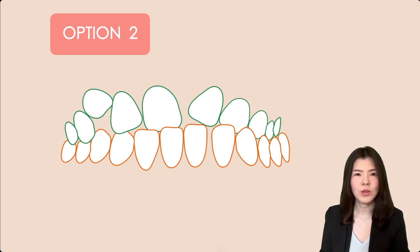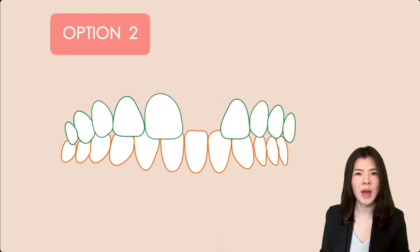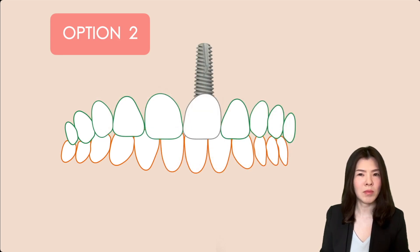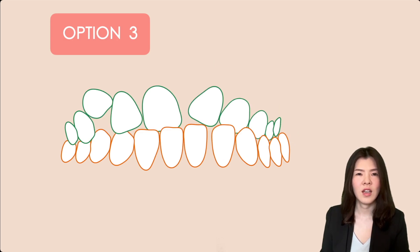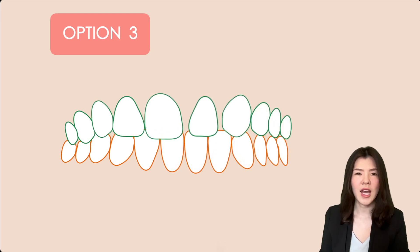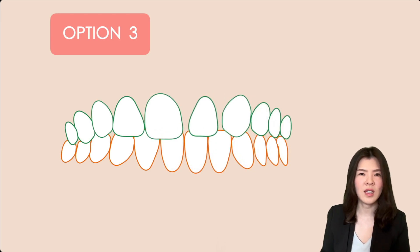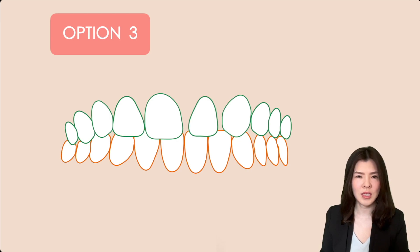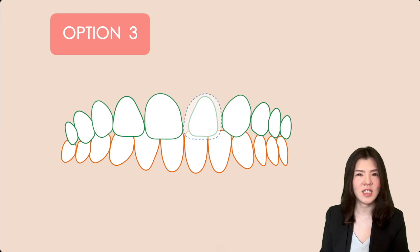Option two: surgical extraction of the impacted tooth and space creation for a dental implant, to be performed after completion of growth. Option three: surgical extraction of the impacted tooth and space closure by moving the lateral incisor to the position of the central incisor, with subsequent prosthetic restoration.